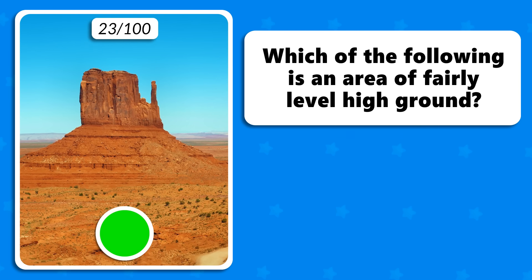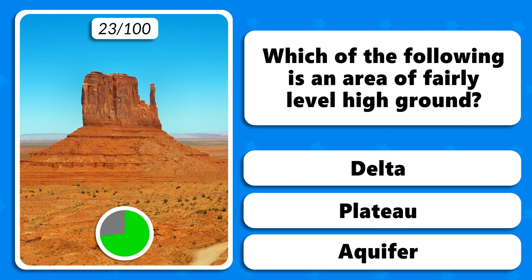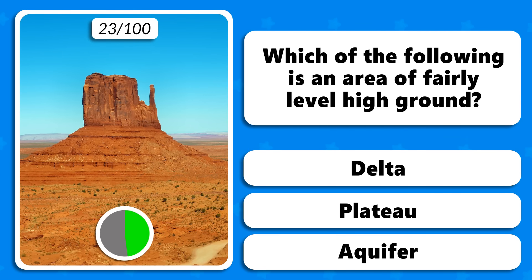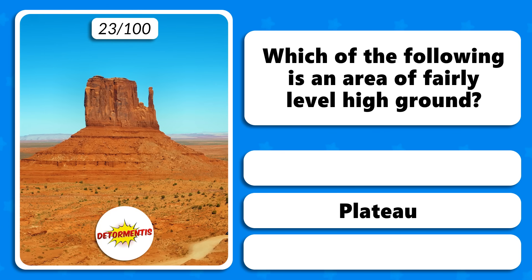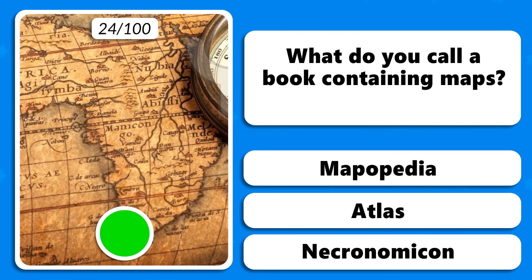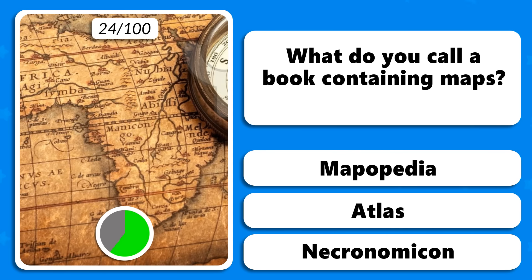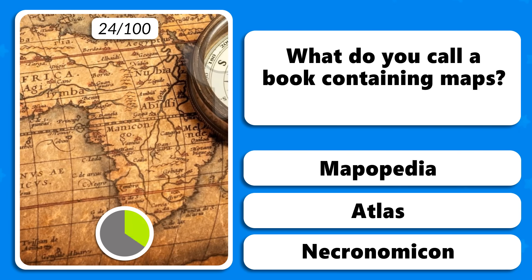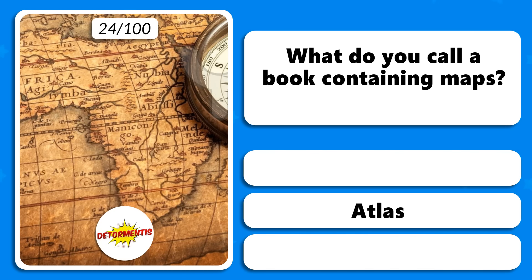Which of the following is an area of fairly level high ground — a delta, a plateau or an aquifer? A plateau. What do you call a book containing maps — a mapopedia, an atlas or a necronomicon? It's called an atlas.